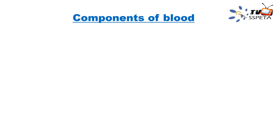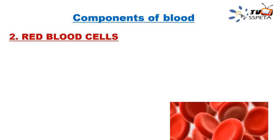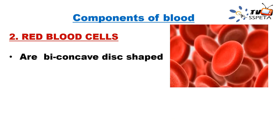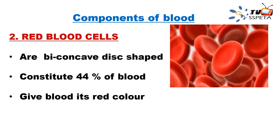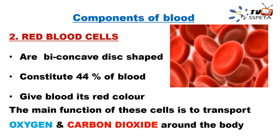The second component of blood is red blood cells. As you can see in the diagram, the shape is biconcave. Red blood cells constitute 44% of the blood and give blood its red color. Their main function is to transport oxygen and carbon dioxide around the body.